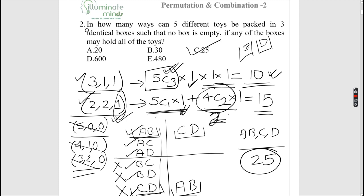So 5C1 × (4C2/2) × 1 = 15. The total is 10 + 15 = 25. The key point: with identical boxes, choosing AB in one box and CD in the other looks the same as CD in one and AB in the other — no differentiation — hence divide by 2, giving answer 25.